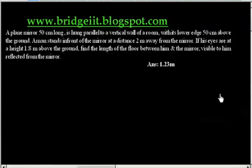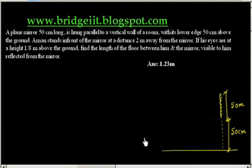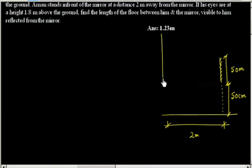This problem says we have a plane mirror. The height of the plane mirror is 50 cm, and it is kept above the ground at 50 cm from the ground — so this height is 50 cm, and the height of the mirror is also 50 cm. There is a person standing at a distance of 2 meters, and the height of the person's eye is 1.8 meters above the ground. So this is the person P, and the eye I is at 1.8 meters. This is given.